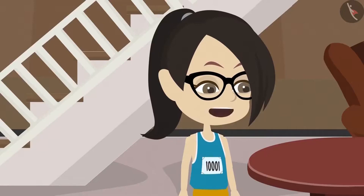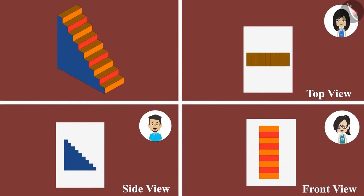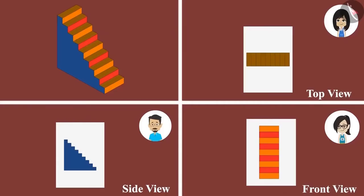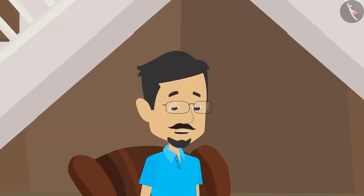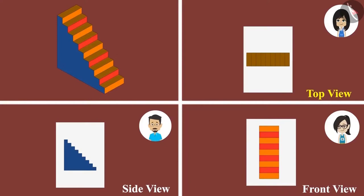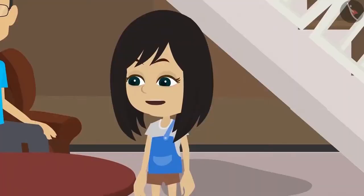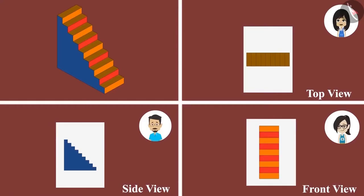Now I have understood what is three-dimension. And that when you look at them from different sides, their shapes appear different. Yes, but do you know that to draw the shape of 3D or three-dimensional objects accurately, the drawing is made from three different sides, like the way we drew this staircase. One is called the top view, which tells us how an object will look if seen from the top. This means my drawing is a top view of the staircase, which is a brown-colored rectangle. Right? Yes, Neha.